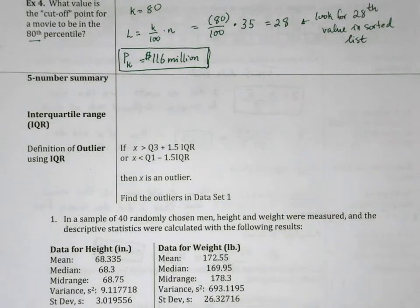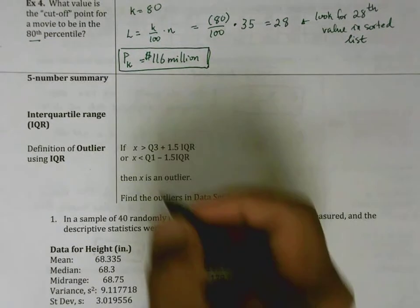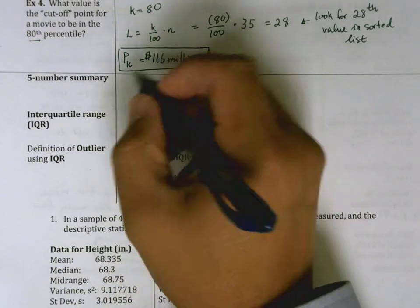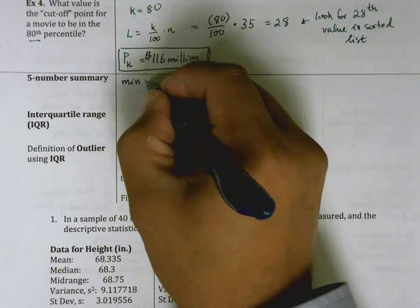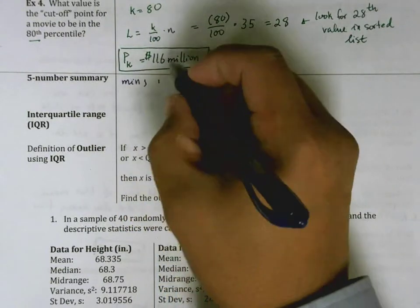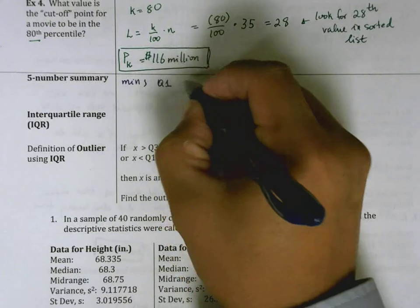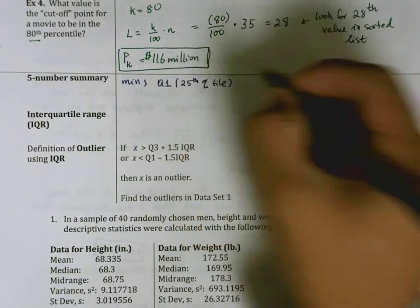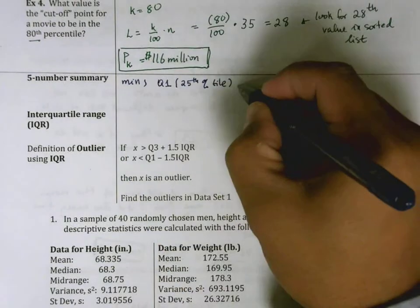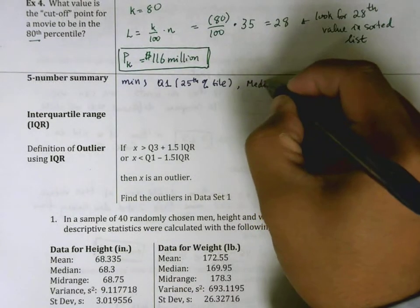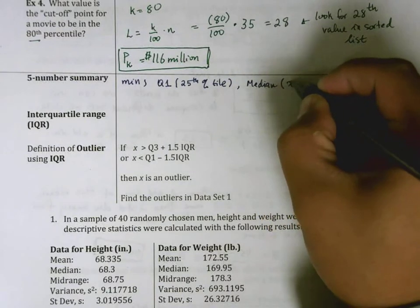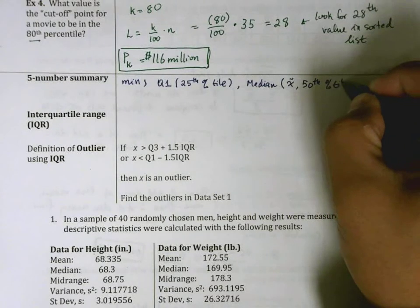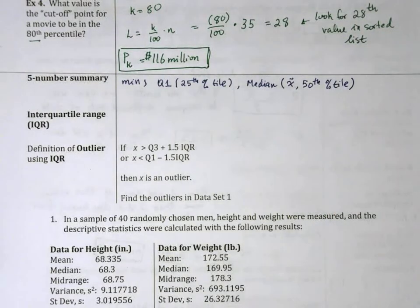So the five-number summary is, well, very similar to what it sounds — it's five numbers. It's basically five numbers that can be used to summarize a set of data. The first number is the minimum value, the second is Q1, which we call Q1, and this is the 25th percentile. Then we have the median, also known as x-tilde, also known as the 50th percentile. These are all different ways of saying the same thing.